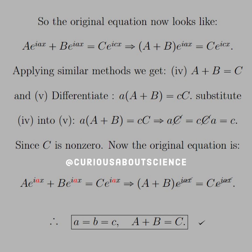Applying similar methods, if we plug in zero here for x, we get that A plus B equals C. Showed that already in the first part. If we differentiate and evaluate at x equals zero, we get a times big A plus big B equals c times little c times big C.